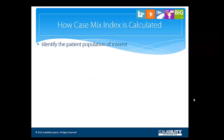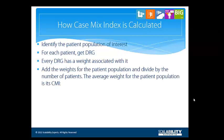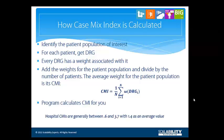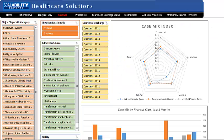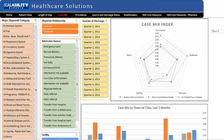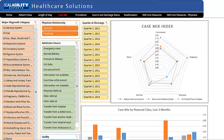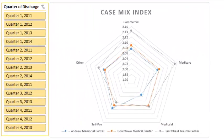Here's how CMI is calculated: identify your patient population, get the DRG for each patient and add all the associated relative weights, then divide by the number of patients in your population. A CMI can be computed for an entire hospital based on its entire patient population or any group of patients. Scalability Expert's case mix dashboard has two graphical data presentations. In the top right corner is a radar chart showing case mix broken out by financial class for the three hospitals in the system. Each of the concentric pentagons represents a particular value of CMI. Points farther out towards the outer perimeter have a higher value, and you can position the cursor over a data point to get a pop-up tip displaying the CMI.